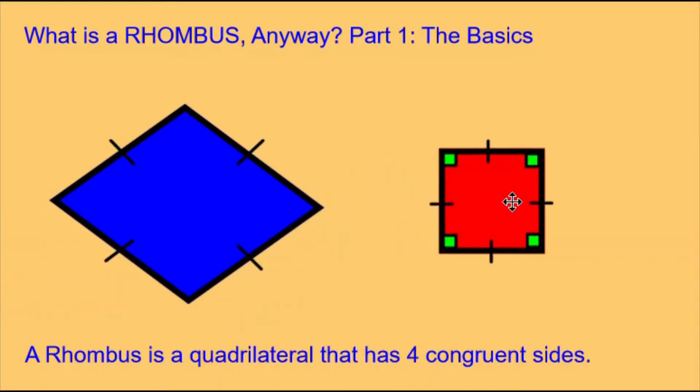You might ask: what about a square? Is a square a rhombus? And the answer is yes. Because a square has four congruent sides, all squares are also rhombuses.